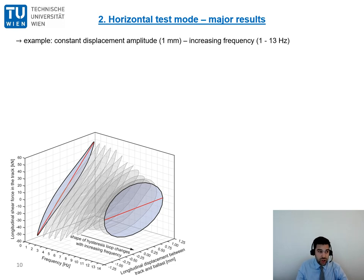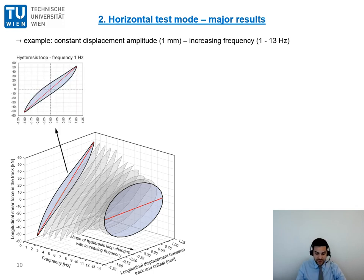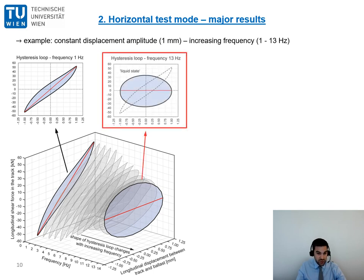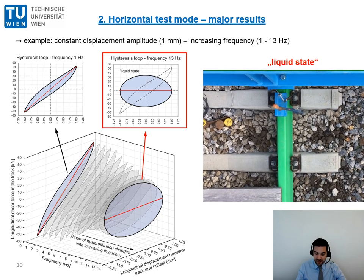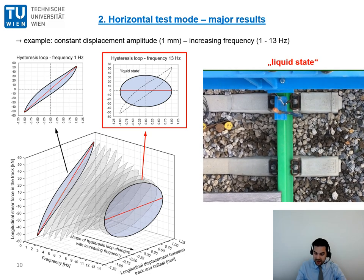Finally on this slide I will show you one very interesting phenomenon we detected. So below you can see a three-dimensional illustration of measured hysteresis loops. In this experiment the displacement amplitude is adjusted at a constant value of 1 mm and the resistance force is increased step by step from 1 to 13 Hz. You can see with increasing frequency the shape and slope change. At 13 Hz the loop shows a zero degree slope and the shape corresponds to an ellipsis. And at this point the ballast undergoes a change to a sort of a liquid state. And now in this video of the related experiment you can see how this liquid state looks in reality.